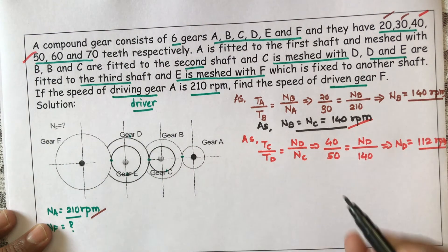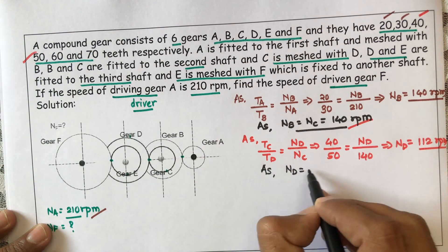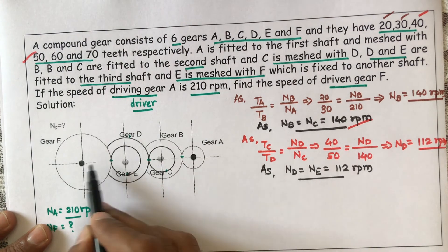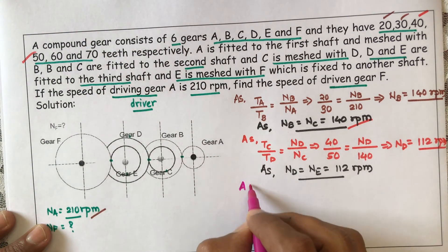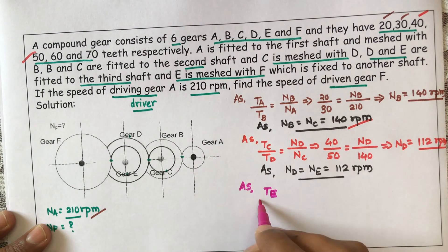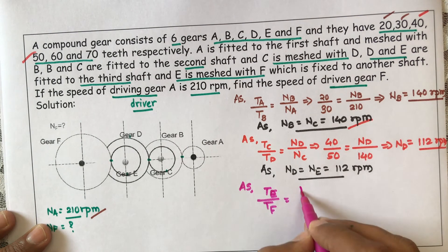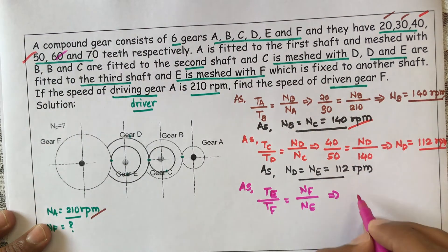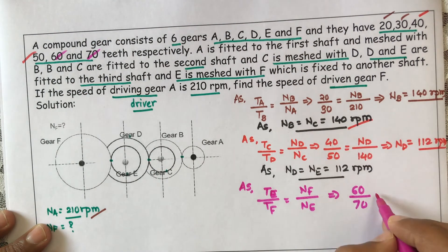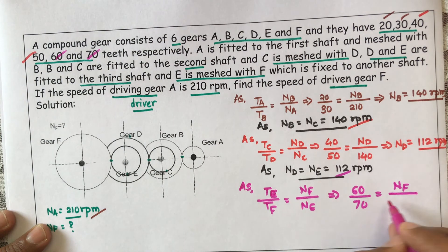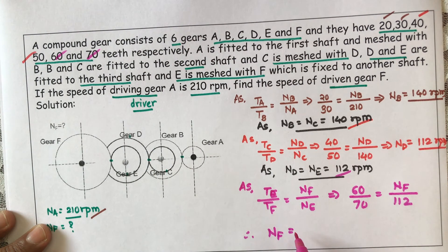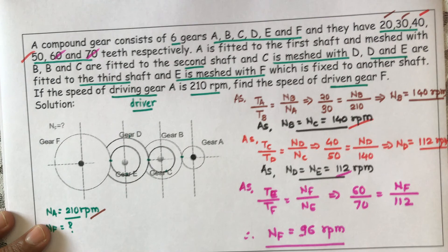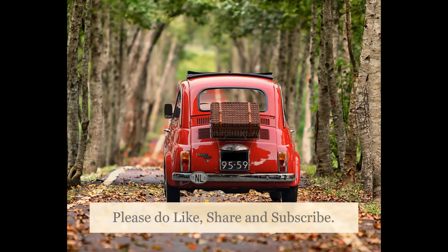As D and E are mounted on the same shaft, ND = NE = 112 RPM. Since E is meshed with F, we write TE / TF = NF / NE. Putting in the values: 60 / 70 = NF / 112. Therefore, NF = 96 RPM.